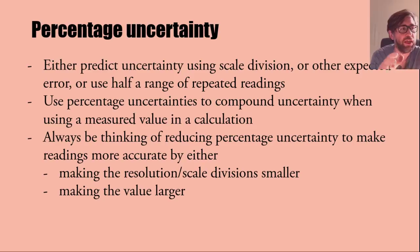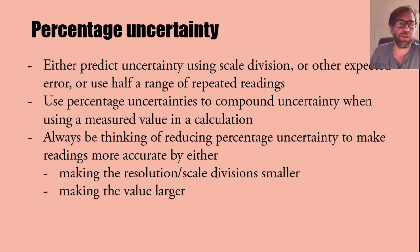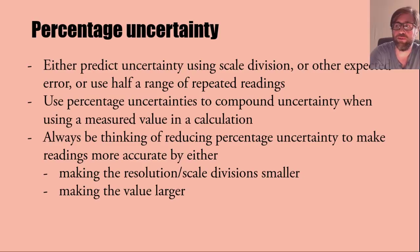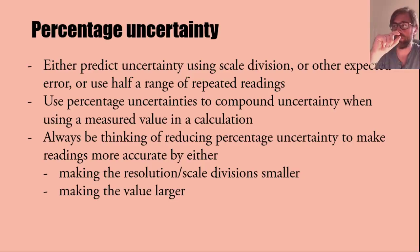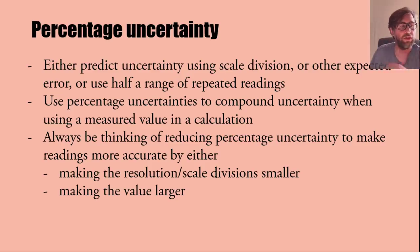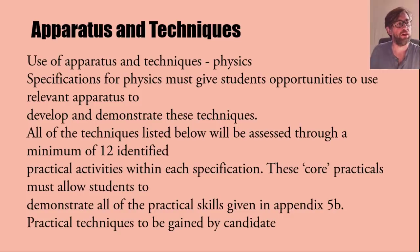Always be thinking about percentage uncertainties. You must use percentage uncertainties if you want to compound an uncertainty — when you've used an uncertainty to make a calculation you have to use percentage uncertainty because you can't add two different quantities directly. Always think about reducing percentage uncertainty: make the resolution smaller by picking an instrument that measures to higher precision, or make the thing you're measuring larger.